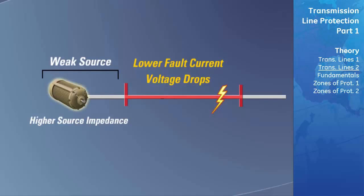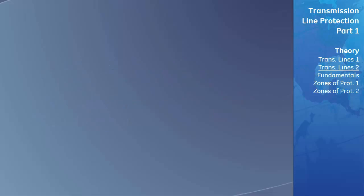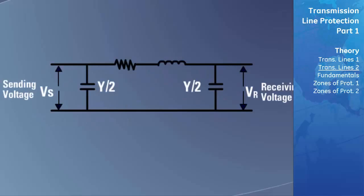At the time of a fault, the system impedance ratio must be considered when determining the type of protection needed and the speed at which faults need to be cleared by relaying. When the current or voltage levels need to be accurately calculated at a specific point on the line, the protection engineer needs to draw an equivalent model of the transmission line. Different models are used for different lengths of line, and these models are in three categories: short, medium, and long lines.